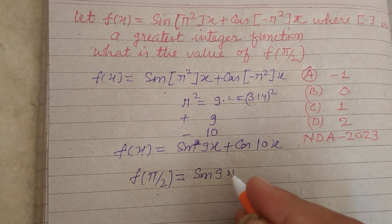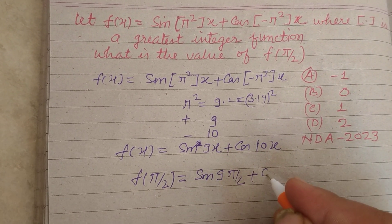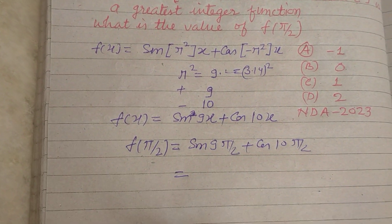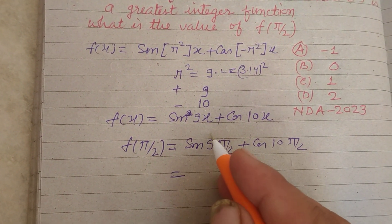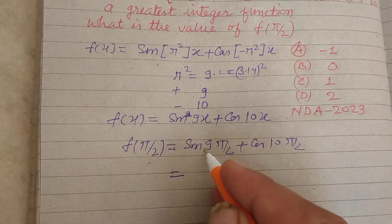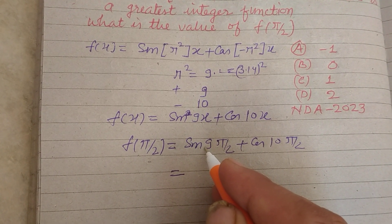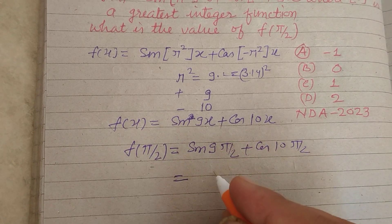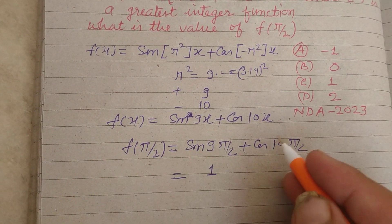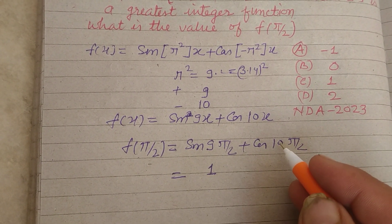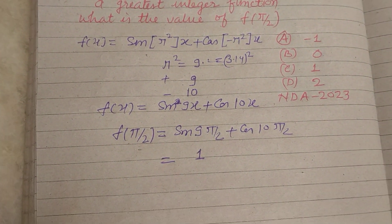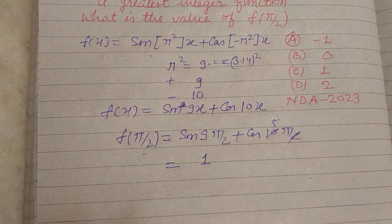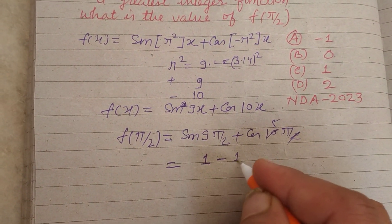So we get sin(9 · π/2) + cos(10 · π/2). Now sin(9π/2) = sin(4·2π + π/2) = 1. And cos(10π/2) = cos(5π) = cos(π) = -1. So this becomes 1 + (-1).